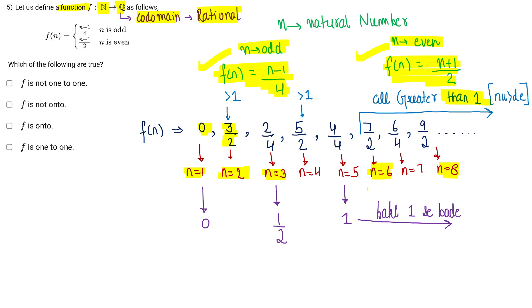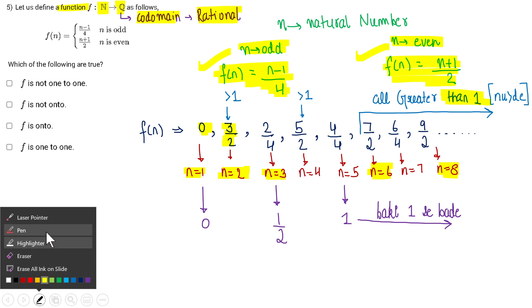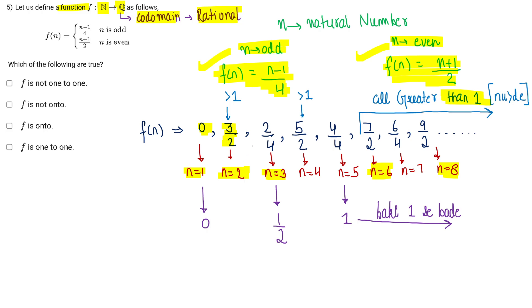I took from n equals 1 to n equals 5 for analyzing. What I found is that 3/2 is greater than 1 and 5/2 is also greater than 1.